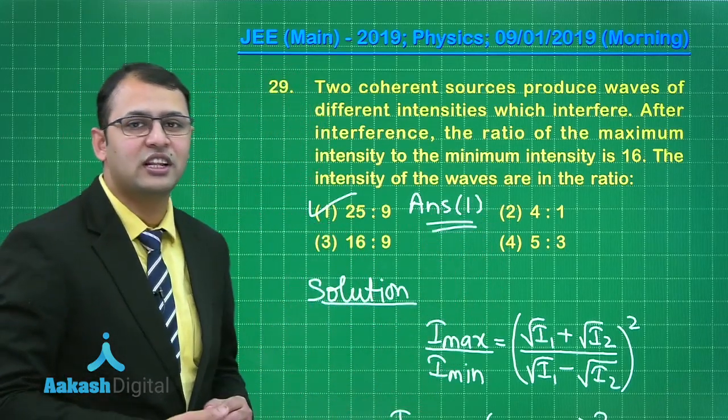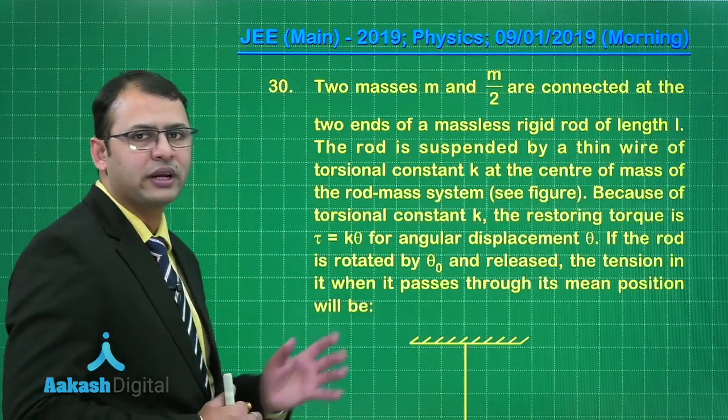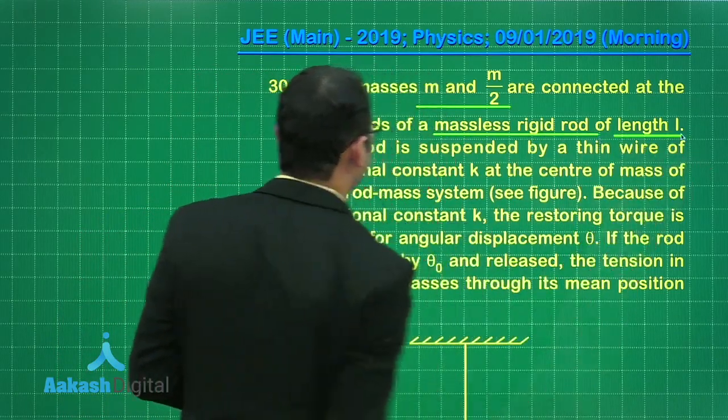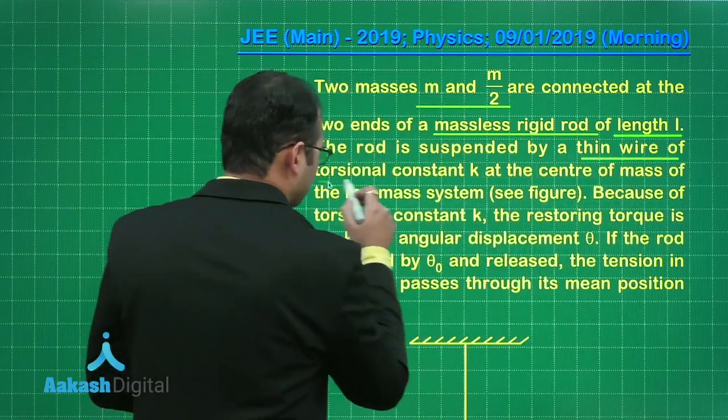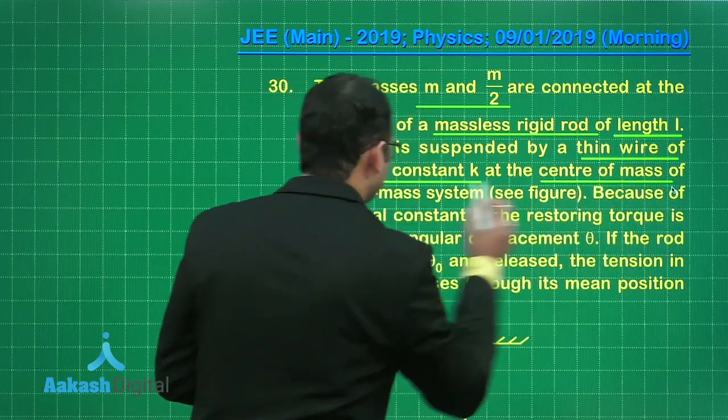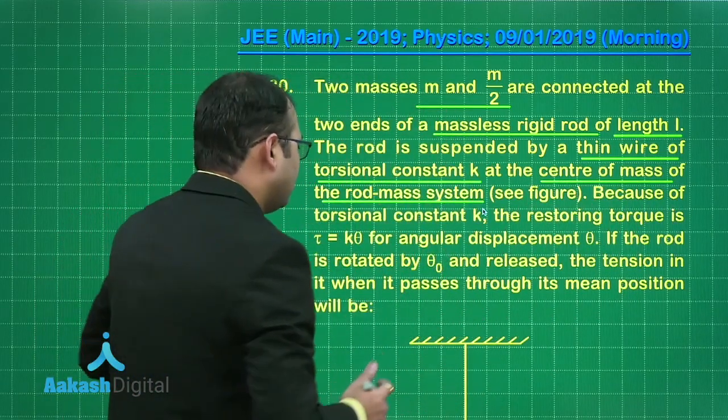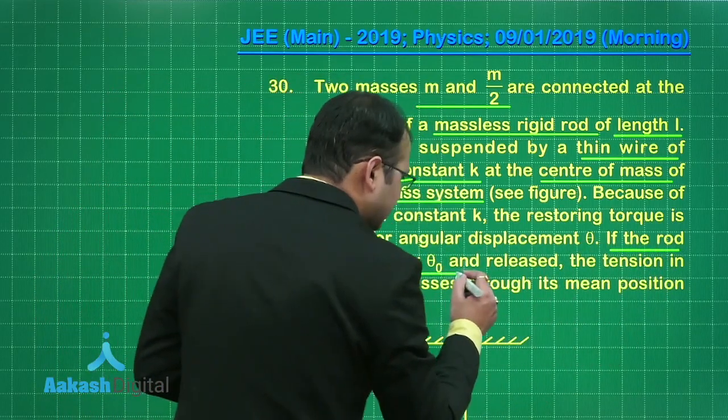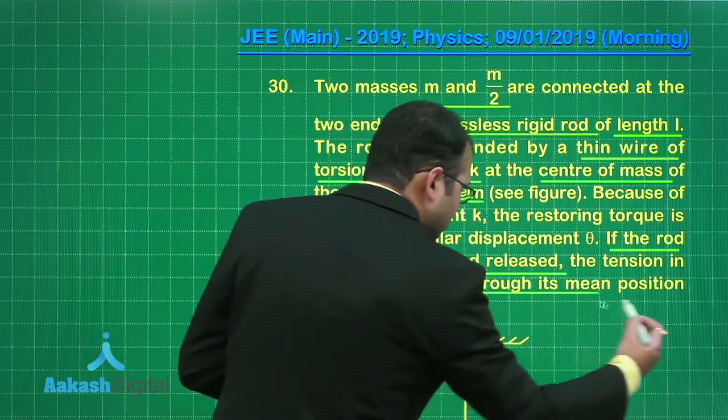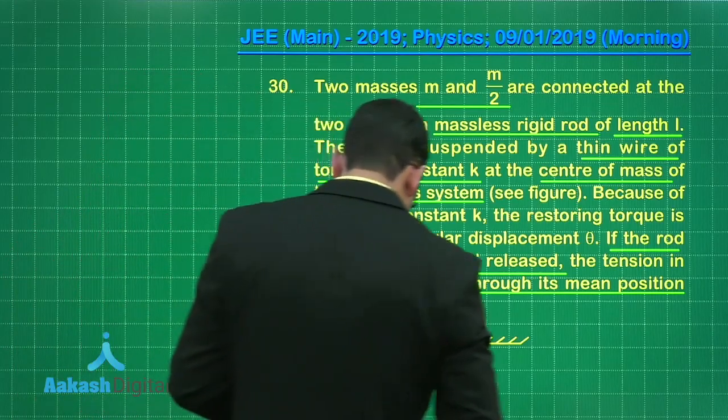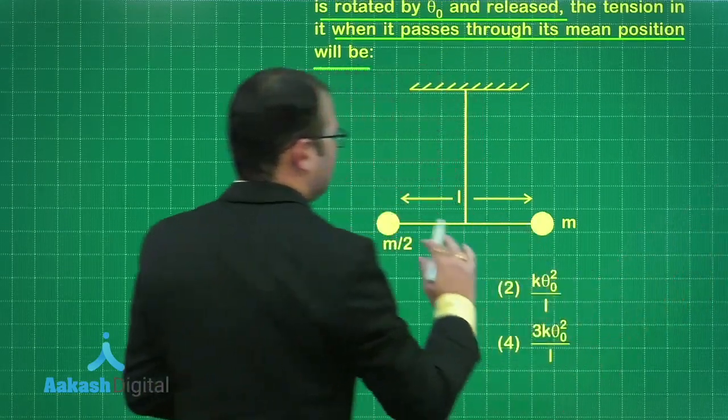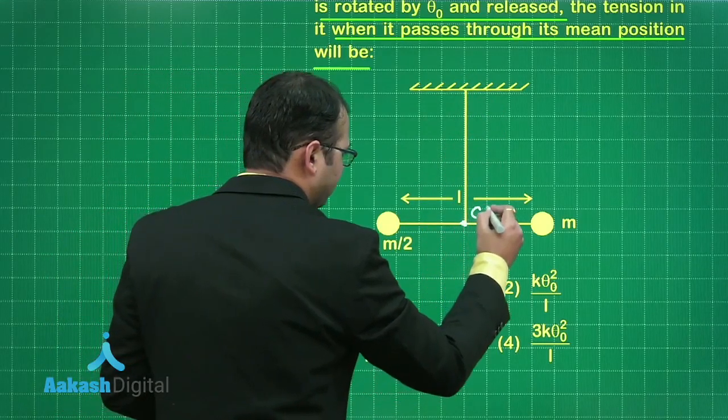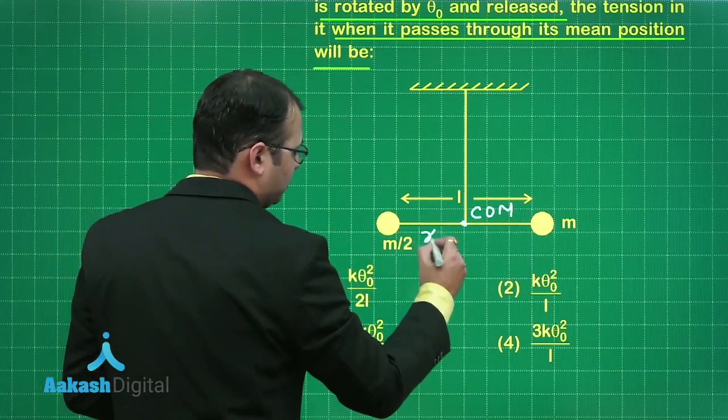So let's see which is the best suited option. So among this following option 1 is the answer to this question. Hope you have understood this one. Let's move to the last question of this paper. Now this question belongs to mechanics. Here there are two masses that is M and M by 2. They are connected to two ends of a massless rigid rod of length L. The rod is suspended by a thin wire of torsional constant K at the center of mass of this two body system.